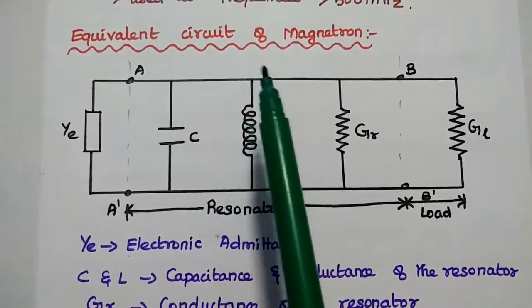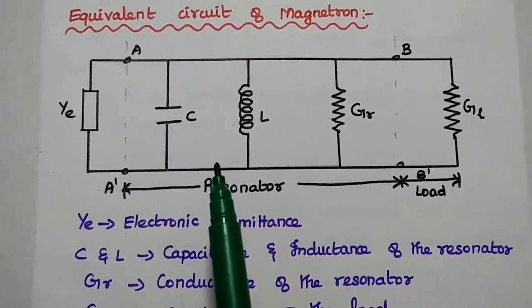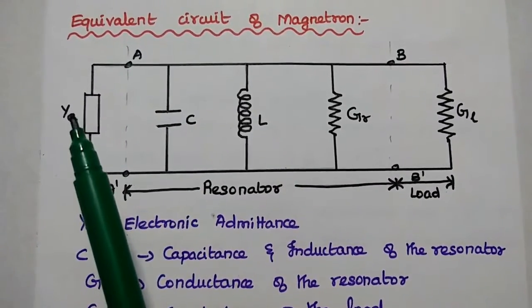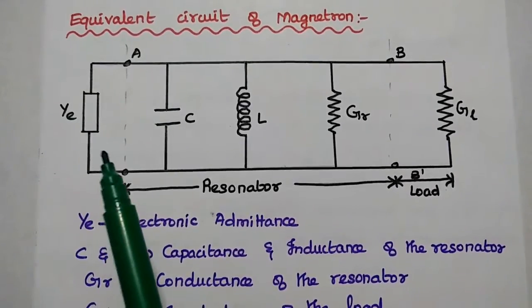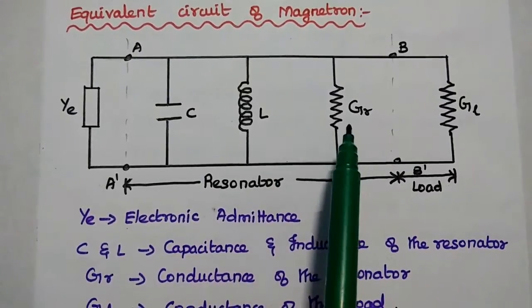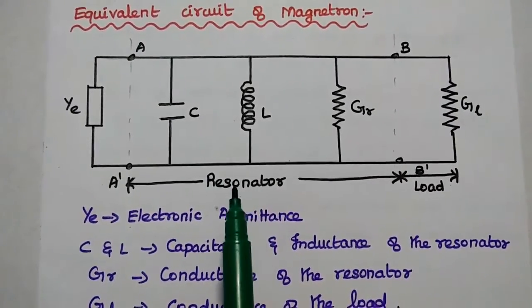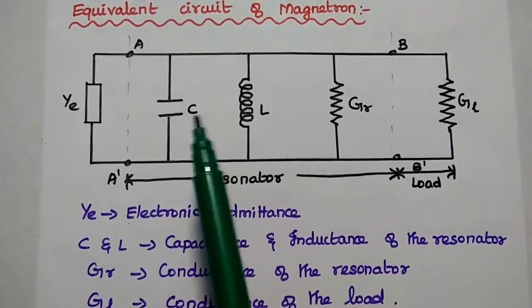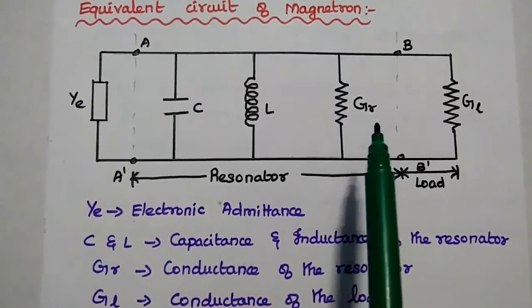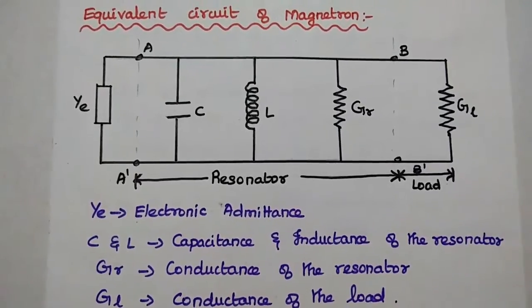Next is the equivalent circuit of the magnetron, representing the equivalent circuit of the cavity. Here Y_E is the electronic admittance for this magnetron, and L, C, G_R are three components that represent the resonator, meaning the re-entrant resonant cavities. The capacitance, inductance, and conductance of the resonator, along with the conductance of the load G_L, form the complete equivalent circuit.